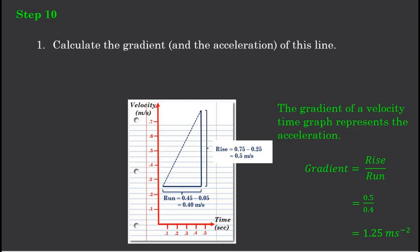When I divide that rise by the run, the change in velocity by the change in time, I can work out an acceleration. In this fictitious example I've made in this PowerPoint, I've got a gradient of 1.25 metres per second per second.